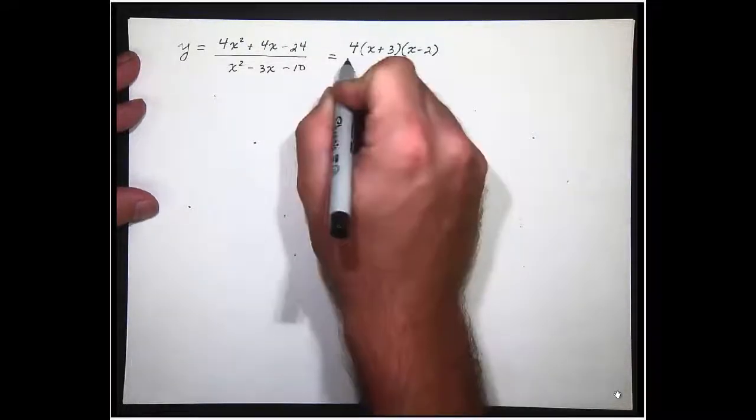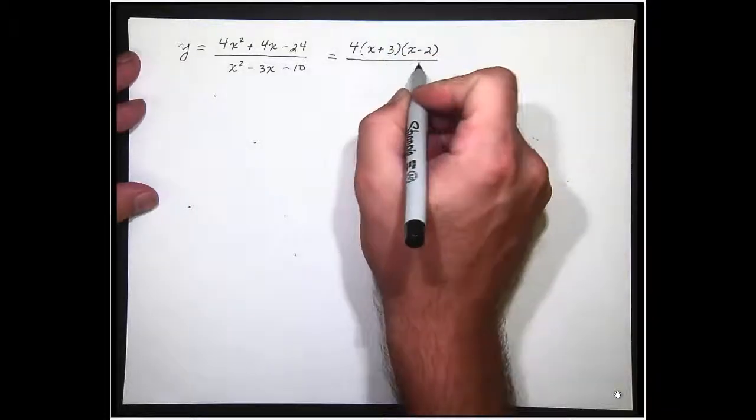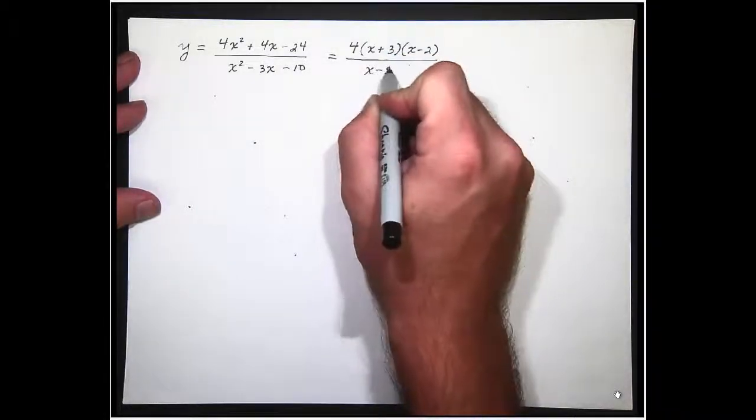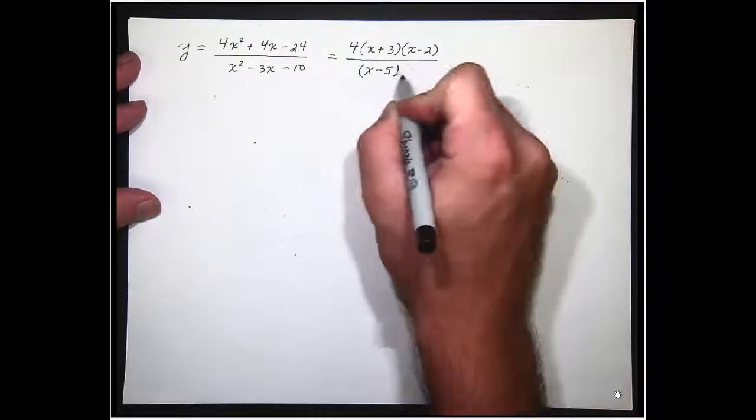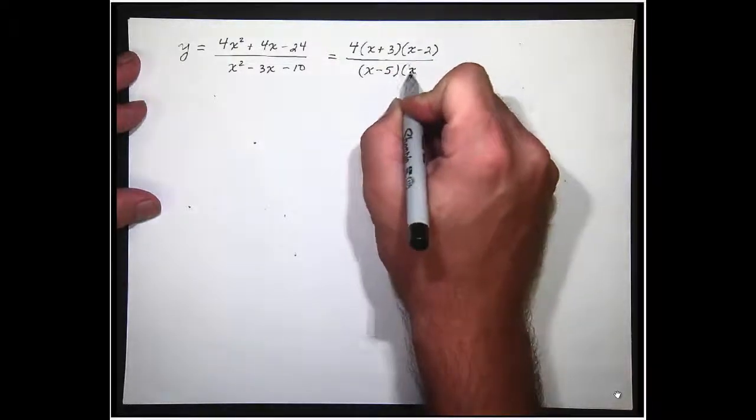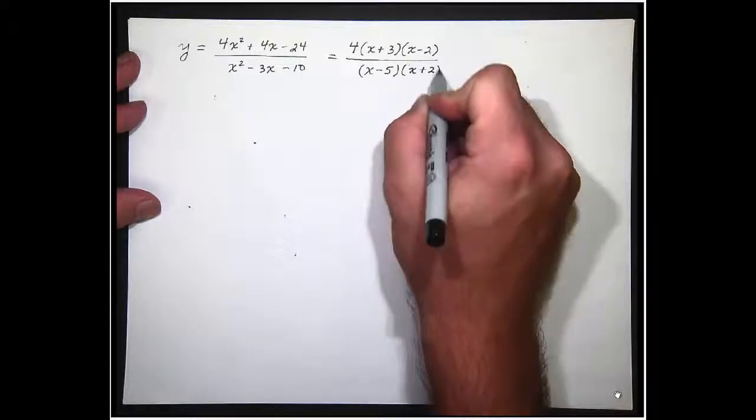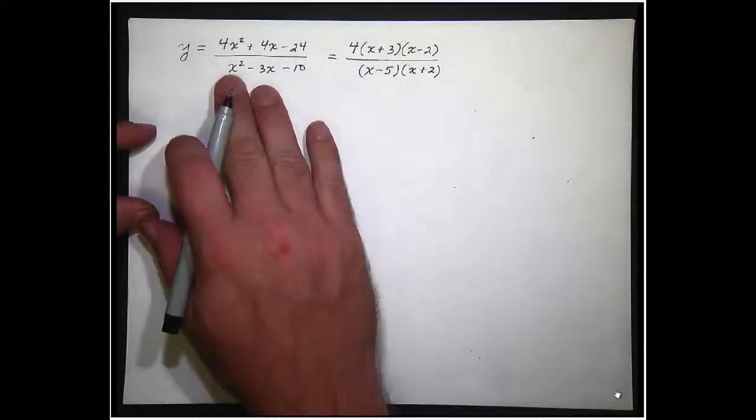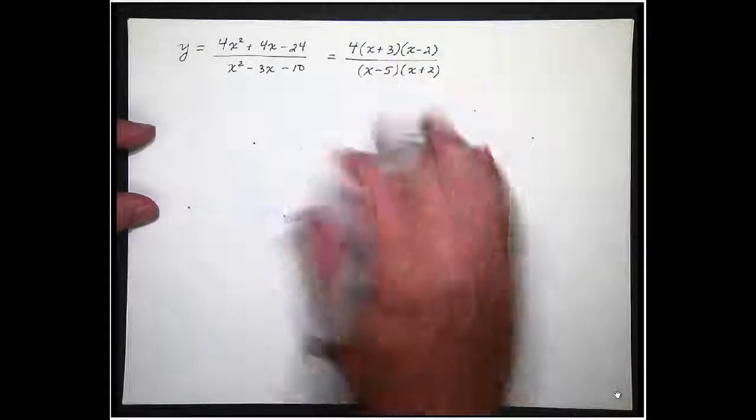If you need a review of factoring there's plenty of videos on YouTube for that. Maybe someday I'll even add a couple of my own there but for now I'm going to assume you know how to factor and we get that. That is this rational function in factored form. So now what?